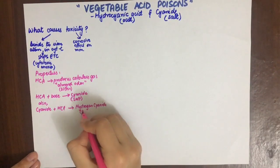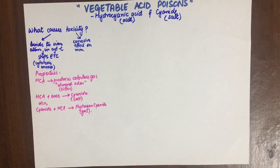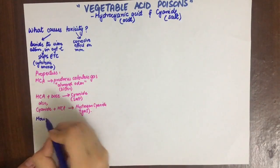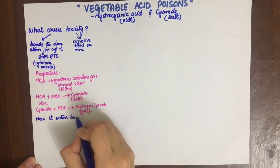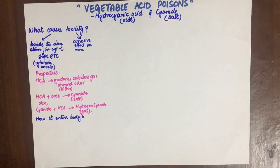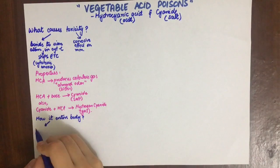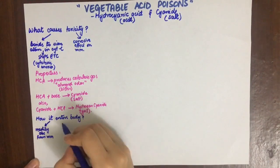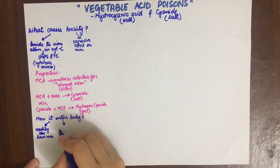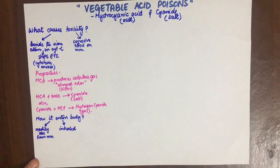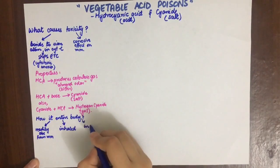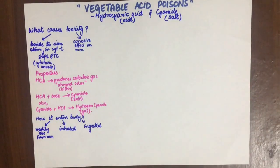How does cyanide enter our body? It can enter readily and is readily absorbed through mucous membranes. It can be inhaled in its gaseous form and is very toxic. It can be ingested, and depending upon the amount of HCl present, it can be toxic or not so toxic.